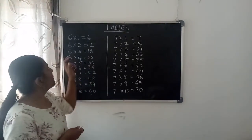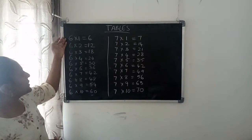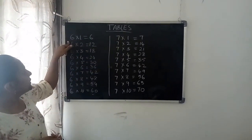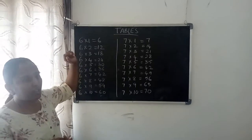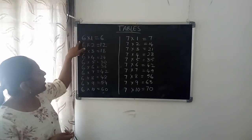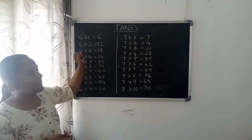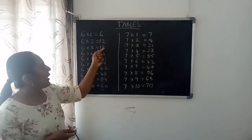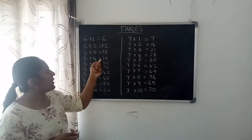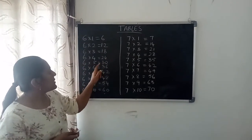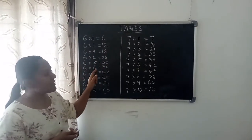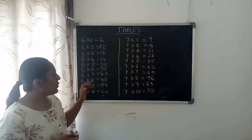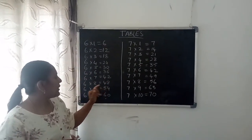Okay, shall we recite one time? Yes children. Six ones are six, six twos are twelve, six threes are eighteen, six fours are twenty-four, six fives are thirty, six sixes are thirty-six, six sevens are forty-two, six eights are forty-eight.